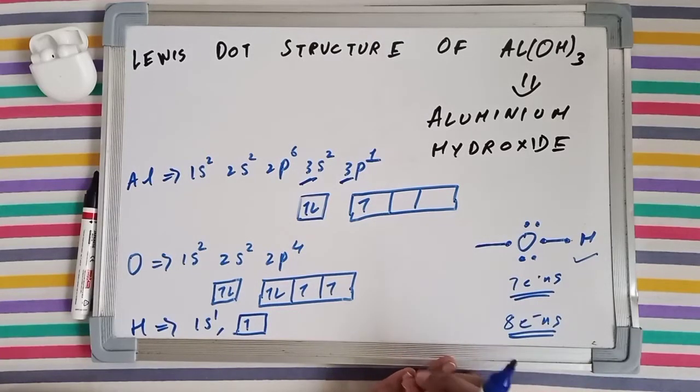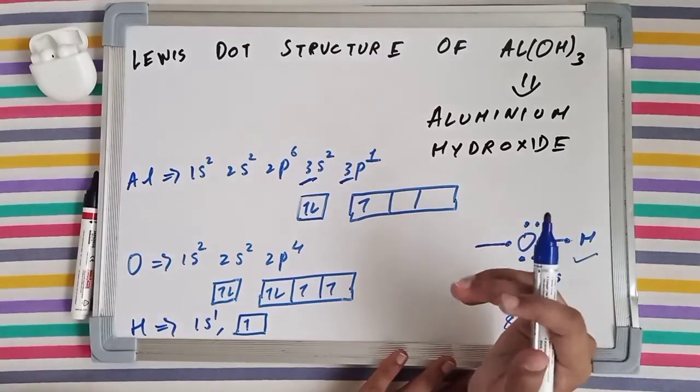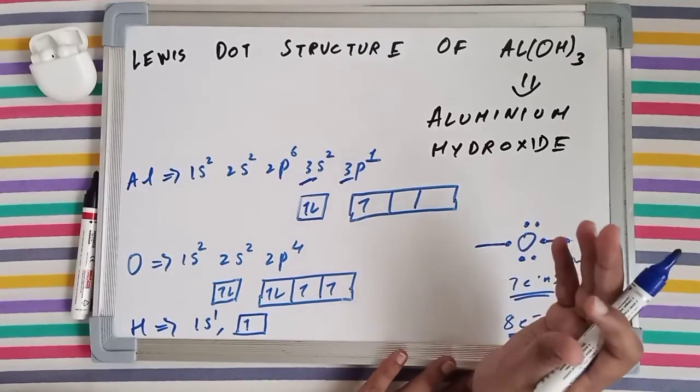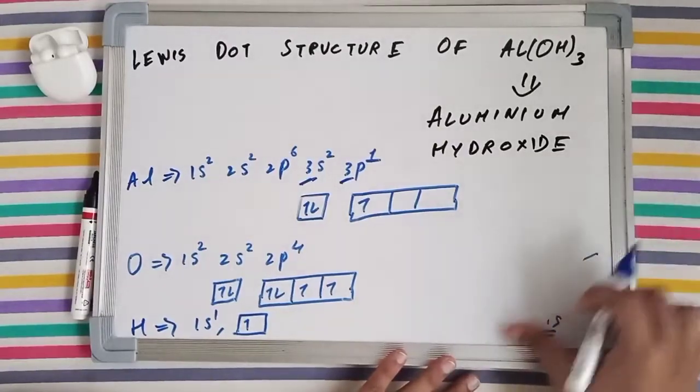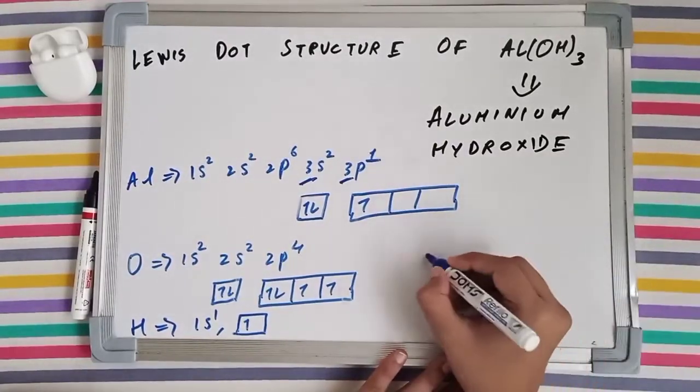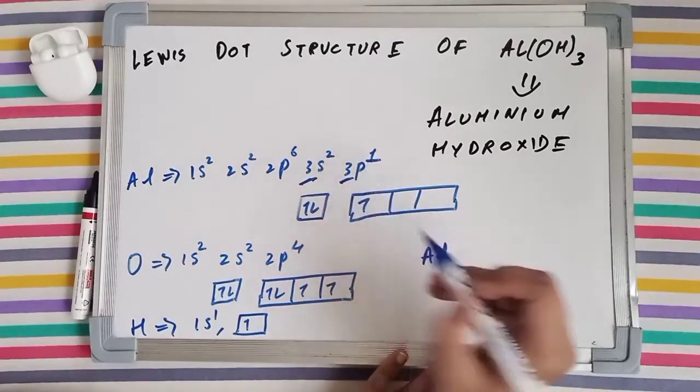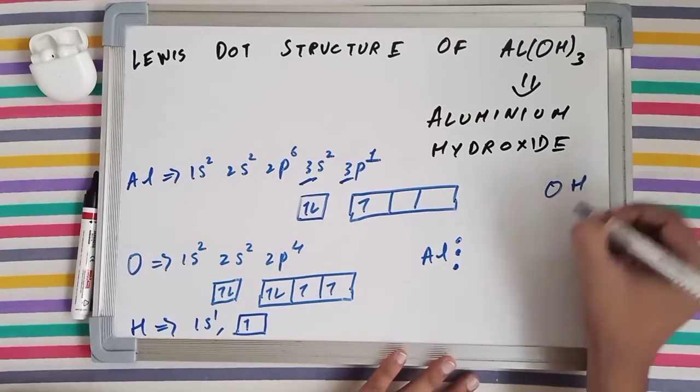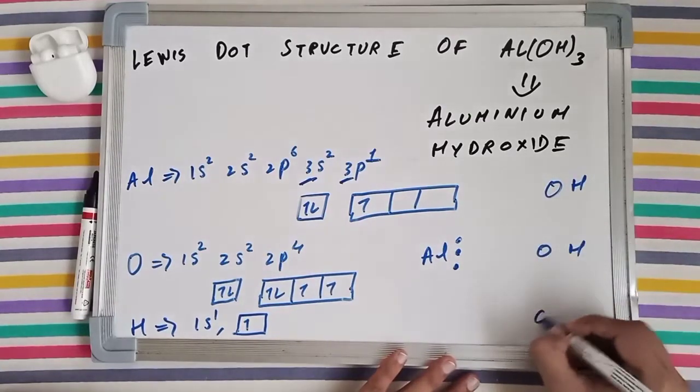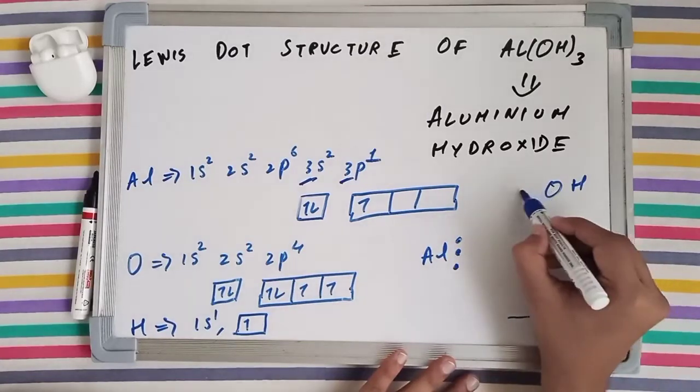But since aluminum is a metal, it is not going to make a bond. Ionic bond is not a bond, it is a force of attraction. So you've got 3 OHs like this and you've got a single aluminum. You've got aluminum with its 3 valence electrons - 2 plus 1, 3. And you've got 3 OHs, and they all need one electron.